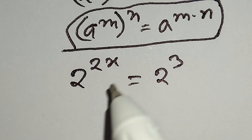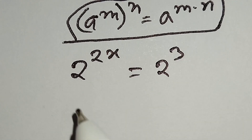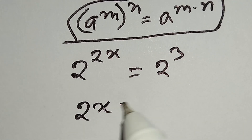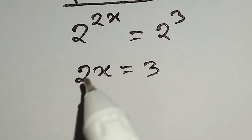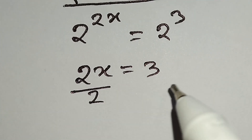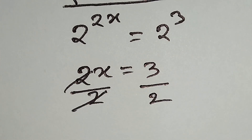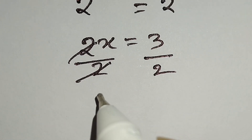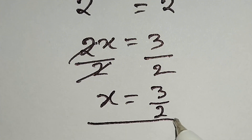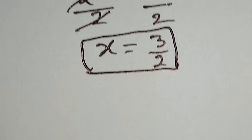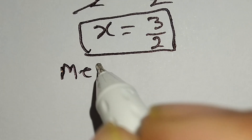Here, both sides have the same base, so we compare exponents: 2x is equal to 3. Now we divide both sides by 2. This 2 and this 2 cancel out, giving us x is equal to 3 over 2. This is our final answer. Now we will solve this problem using Method 2.